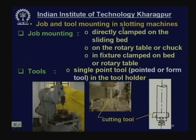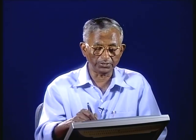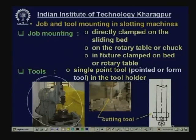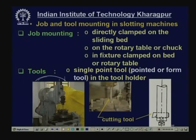Next, job and tool mounting in slotting machines. The slotting machine is a low-productive, non-automatic machine tool that behaves just like a vertical shaper — the cutting tool reciprocates vertically up and down, and the job remains stationary on the table, which may move linearly or rotate slowly. In the slotting machine, the cutting tool is mounted in the tool head mounted on the ram which moves up and down, and the work piece is mounted on the table.